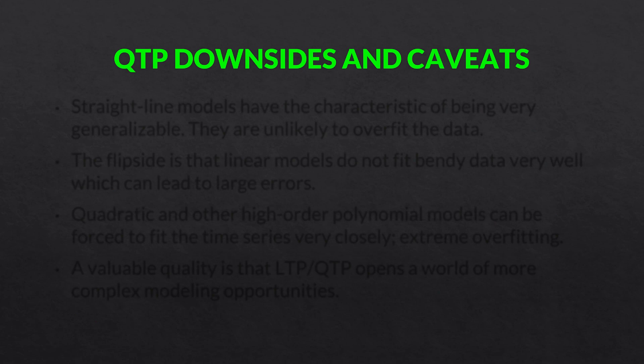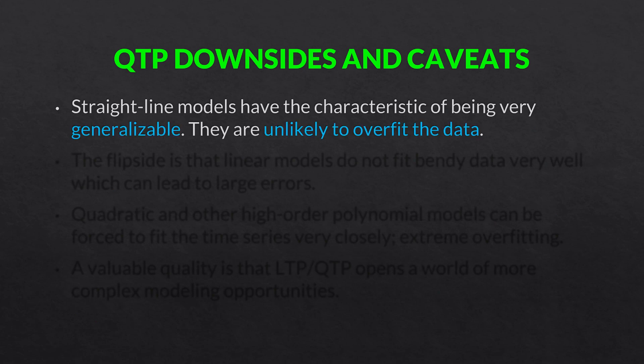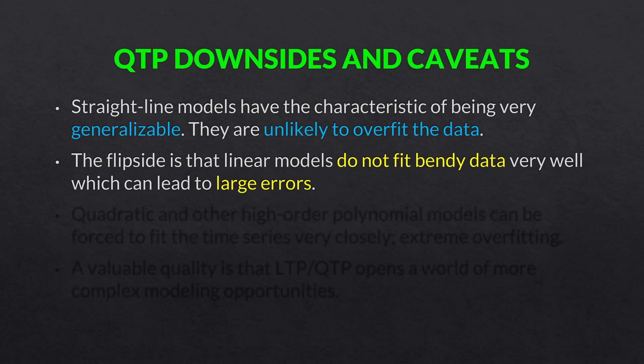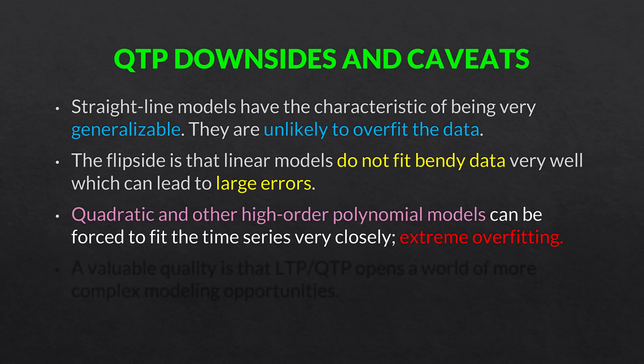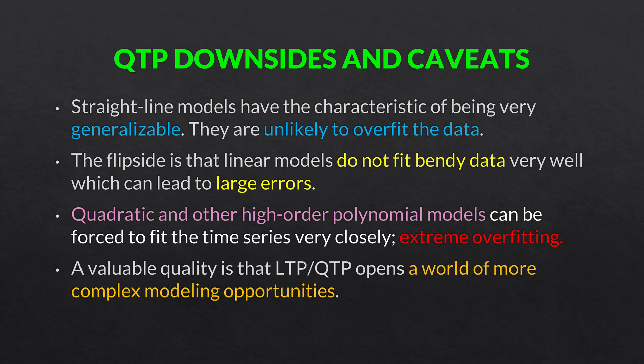There are some downsides and caveats to QTP. Straight line models have the characteristic of being very generalizable — they are unlikely to overfit the data. The flip side is that straight line linear models do not fit bendy data very well, which can lead to large errors. Quadratic and other high-order polynomial models can be forced to fit the time series very closely; however, that can result in extreme overfitting. A valuable quality is that both LTP and QTP and other similar type models open up a world of more complex modeling opportunities, which we will cover in later videos.